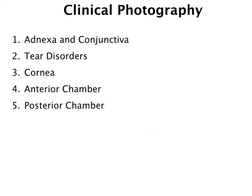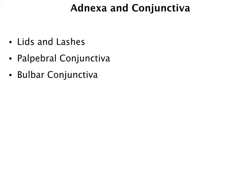Now let's talk about clinical photography. We discussed some of the lighting techniques, and in this section we're going to start learning how to apply those techniques to photographing specific types of pathologies. We're going to cover the adnexa and the conjunctiva, tear disorders, the cornea, anterior chamber, and the posterior chamber. The first areas are the lids and lashes, the palpebral conjunctiva, and the bulbar conjunctiva.